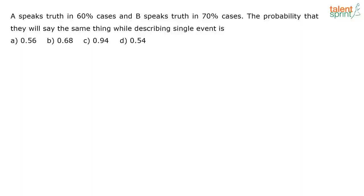A speaks truth in 60% of cases and B speaks truth in 70% of cases. The probability that they will say the same thing while describing a single event is to be determined.